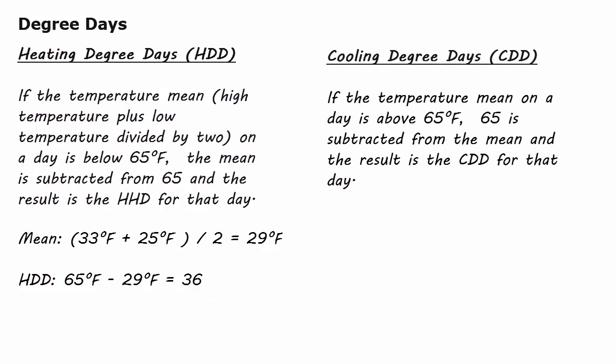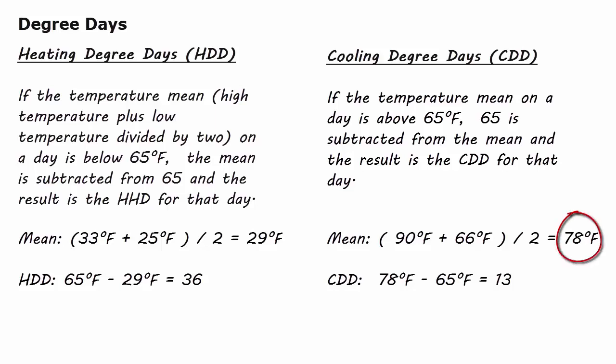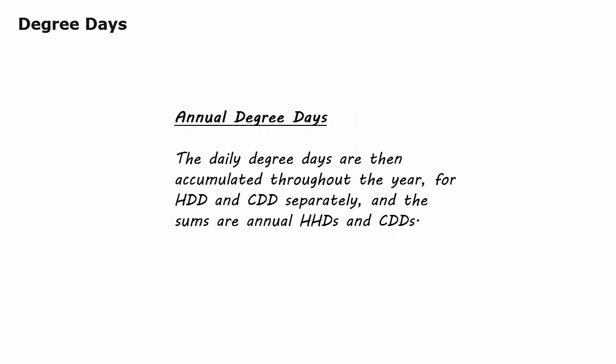For cooling degree days, if the temperature mean on a day is above 65 degrees F, 65 is subtracted from the mean. For example, if the high is 90 degrees F and the low is 66 degrees F, the mean is 78 degrees F. Because the result is above 65, this counts as a cooling degree day: 78 minus 65 equals 13 cooling degree days for that day. The daily degree days are accumulated throughout the year separately for heating and cooling to produce annual heating degree days and cooling degree days.